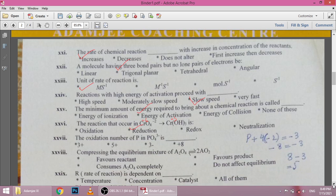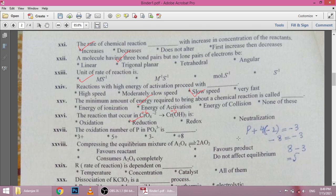Next is oxidation number of P in P₄³⁻. This will be minus 8 plus 8 minus 3, this will be plus 5. Next is compressing the equilibrium mixture. When we compress it, favors product, consumes completely or not affects equilibrium.